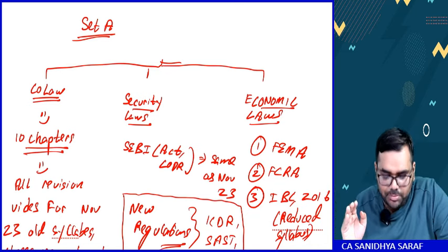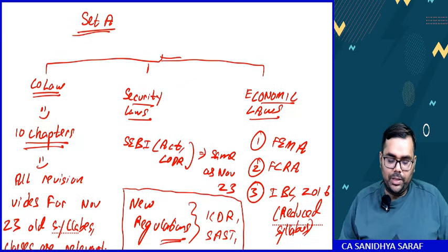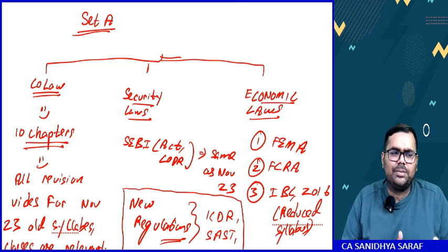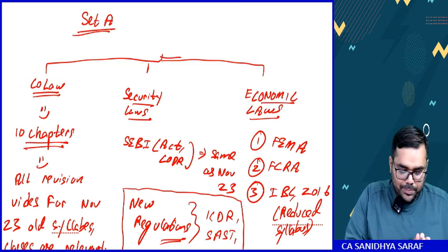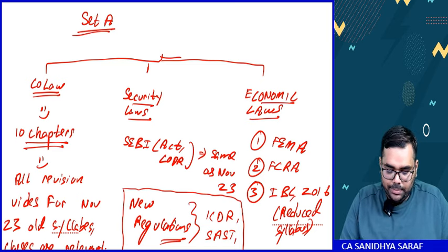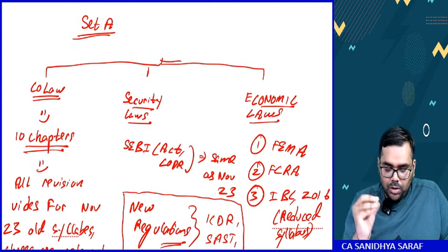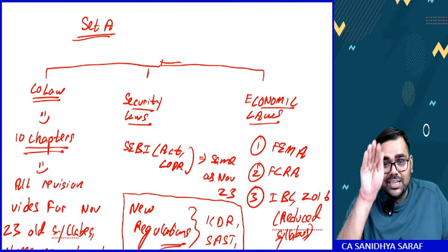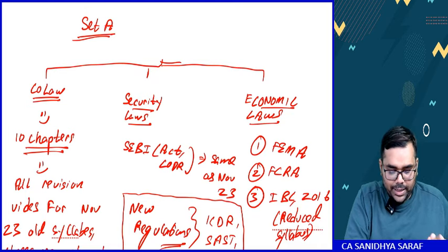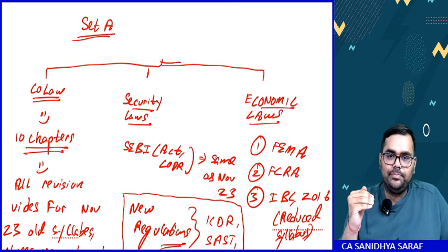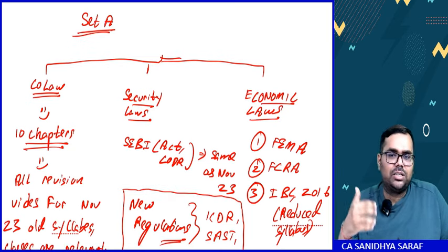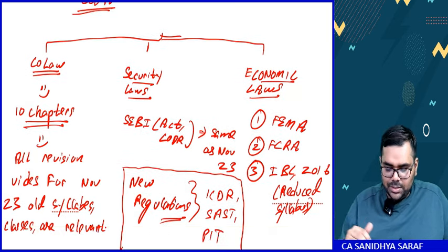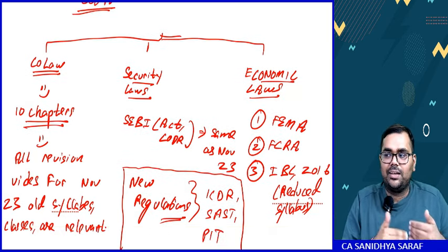SPORM SAT A contains Corporate and Economic Laws. The syllabus is divided into three parts. First is Company Law, then Security Laws, then Economic Laws. In Company Law the topics include directors, board meeting, inspection, inquiry, investigation, and winding up. In Economic Laws we have only three chapters — FEMA, FCRA, and IBC Code.